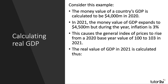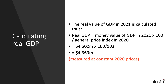So how do we calculate real GDP? The value of real GDP in 2021 is: the money value of GDP in 2021 — four thousand five hundred million dollars — multiplied by 100, divided by the price index for that year, which is 103. That gives an answer of four thousand three hundred and sixty-nine million dollars, measured at constant 2020 prices.